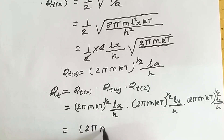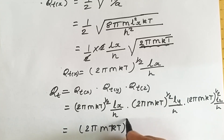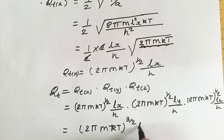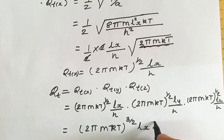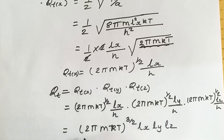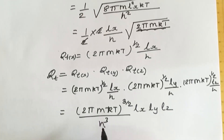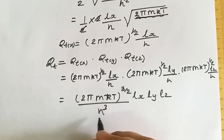Combining these three terms, the total translation partition function qt equals (2 pi m kT) raised to 3/2 times L_x L_y L_z divided by h cubed. Since L_x times L_y times L_z equals the volume V of the container, we can write qt equals (2 pi m kT) raised to 3/2 times V divided by h cubed.